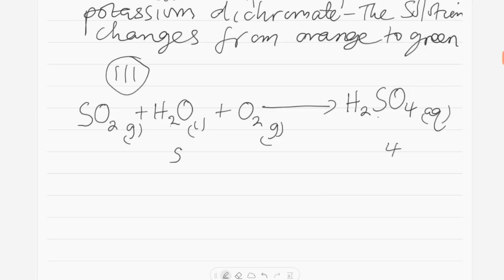So we need to make the oxygen atoms balanced on each side of the equation. To do that, we can make these oxygen atoms equal to one by multiplying by the multiplicative inverse of two, which is one over two. When you do that, one over two times two gives us one, making the number of oxygen atoms balance on both sides of the equation.